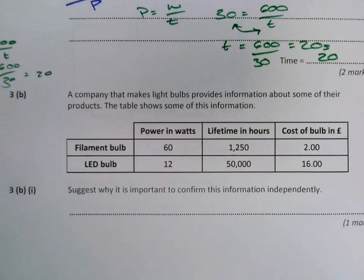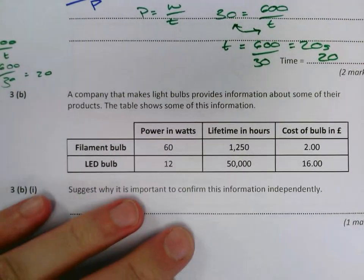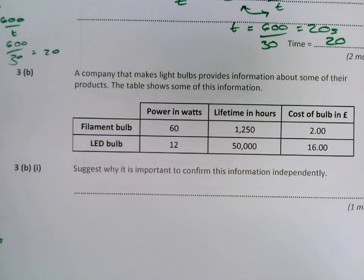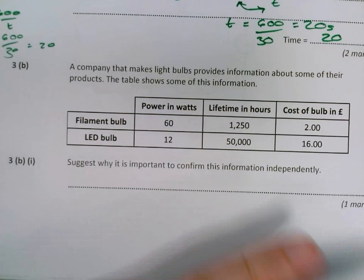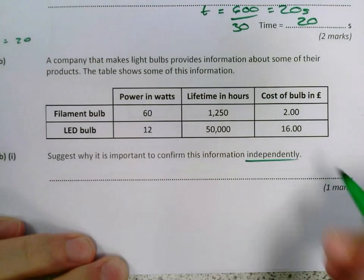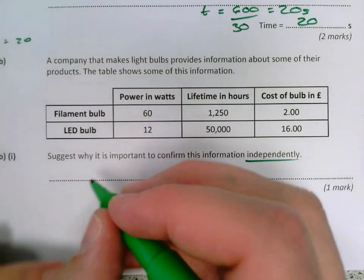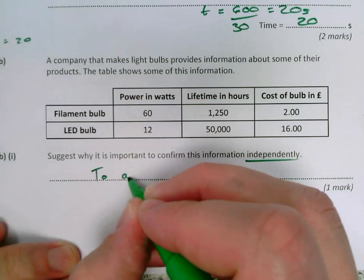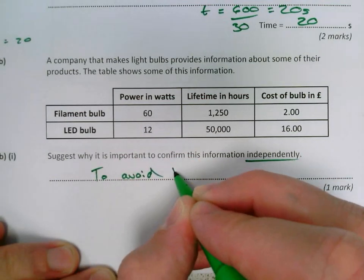3B part 1. A company is making some light bulbs and there's a lot of information about the light bulbs there. This information needs to be done by someone else other than the company, because if the company does its own research obviously it's going to make it sound as good as it can so it can sell as many as possible. So why is it important to do this independently, have another person or another organization do it, is to avoid bias.